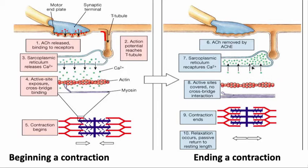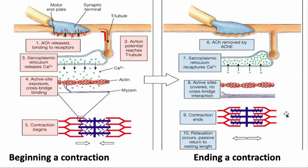The sarcoplasmic reticulum at that point also starts active pumping of calcium back into the sarcoplasmic reticulum — that's active transport, it's a molecular pump. Once the calcium is out of the sarcoplasm, the tropomyosin is able to slide back to its resting position, covering the binding sites on the actin, which means cross bridges can no longer form. If a fresh ATP molecule has bound to the myosin head, the muscle is capable of relaxing and returns to its resting length.